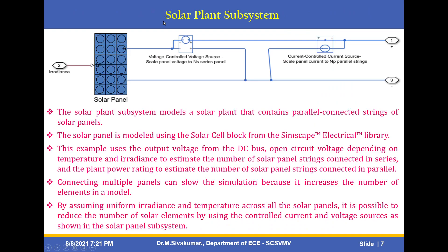This model has a solar plant subsystem. The solar plant contains parallel-connected strings of solar panels. The solar panel is modeled using a solar cell block from the Simscape electrical library. This example uses the output voltage from the DC bus and open-circuit voltage depending on temperature and irradiance to estimate the number of solar panel strings connected in series and the plant power rating, and to estimate the number of strings connected in parallel. Connecting multiple panels can slow the simulation by increasing the number of elements. By assuming uniform irradiance and temperature across solar panels, it is possible to reduce the number of solar elements using controlled current and voltage sources as shown in the solar panel subsystem.